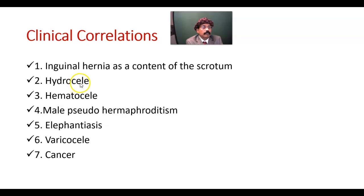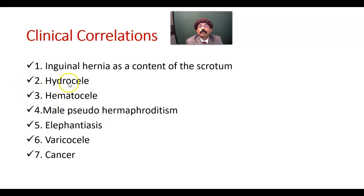The tunica vaginalis is related to the testis and to the peritoneum, so it should not contain any fluid. But if it contains fluid, there will be development of hydrocele between the parietal layer and the visceral layer of tunica vaginalis. That is a remnant of the processus vaginalis that guided the testis to reach the scrotum.